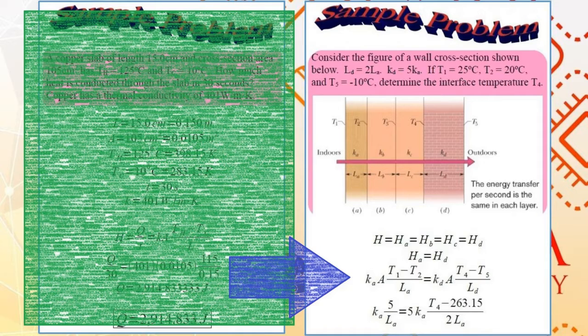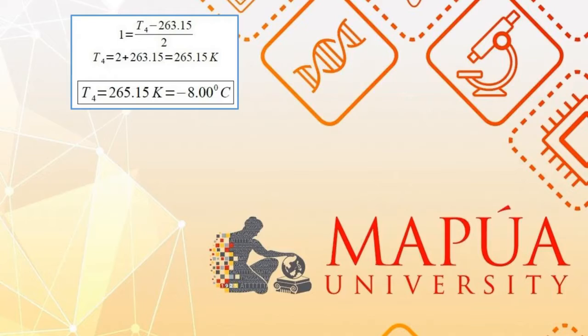Simplifying, we see that the only unknown quantity left is temperature T4, which is what the problem is asking for. We are able to calculate T4 to be 265.15 Kelvin or negative 8.00 degrees Celsius.